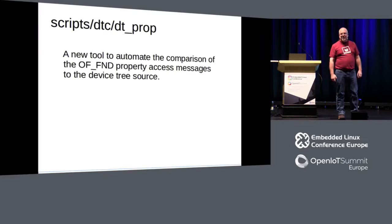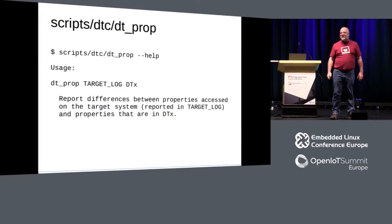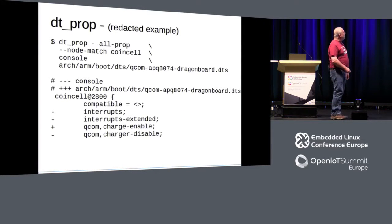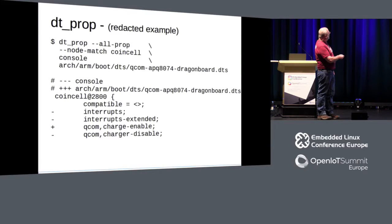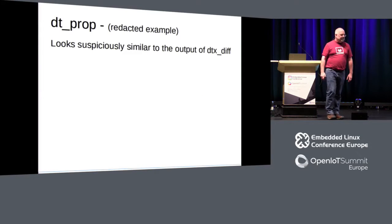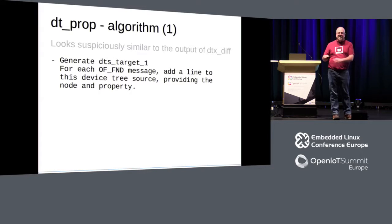I decided it's time to automate this — new tool: DT_prop. It's going to compare that console log file to the device tree. Very easy: you just give it the target log file and a device tree in one of the many possible formats — whether it's source, a binary blob, or a filesystem tree from the target. Here's the algorithm of how DTProp works.